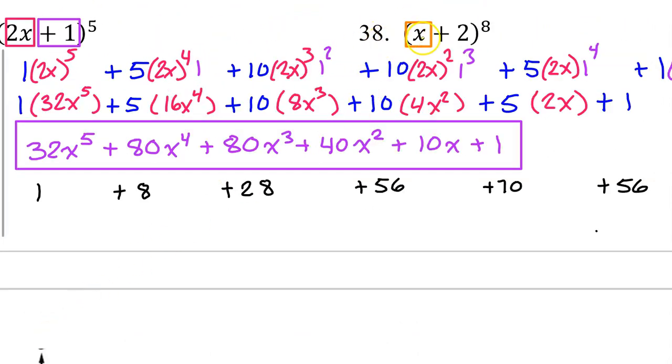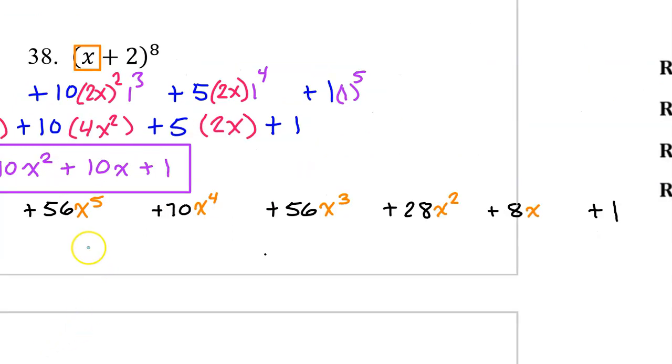So now I take my term from the left, and I start off on the left with x to the eighth power, x to the seventh power, x to the sixth power, and so on. Then I grab the term from the right, and I write that on the right. So I will have 2 to the eighth power, 2 to the seventh, 6, 5, 4, 3, etc.